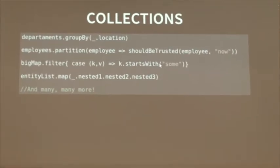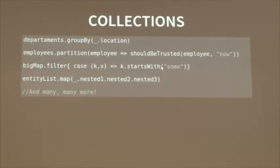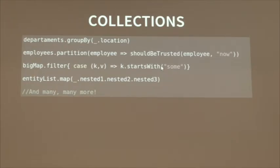Everywhere in Scala there are a lot of collections. When I'm debugging something and there's a breakpoint, there's a big collection — a big list of departments, employees, anything. What can I do right now? I can go through each one and see if something is wrong because something is failing at some point. Without lambdas it's really hard — I end up checking one by one. But with a lambda I can group things by location, partition employees, filter, map — I can gather only the information I need from a big list.